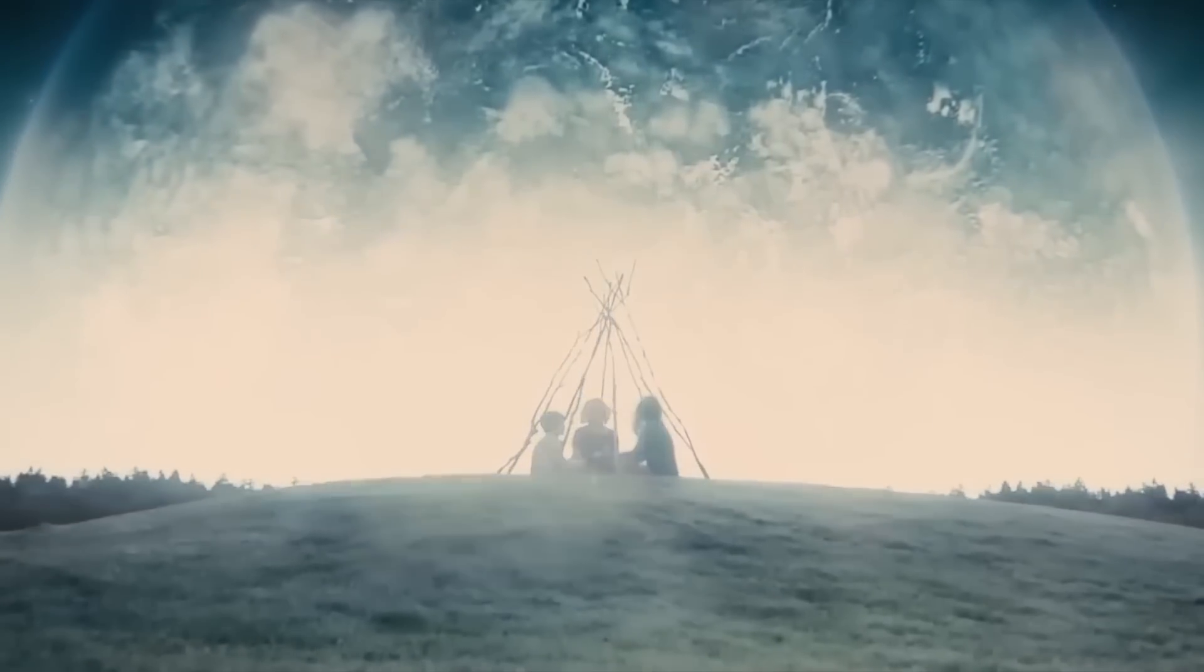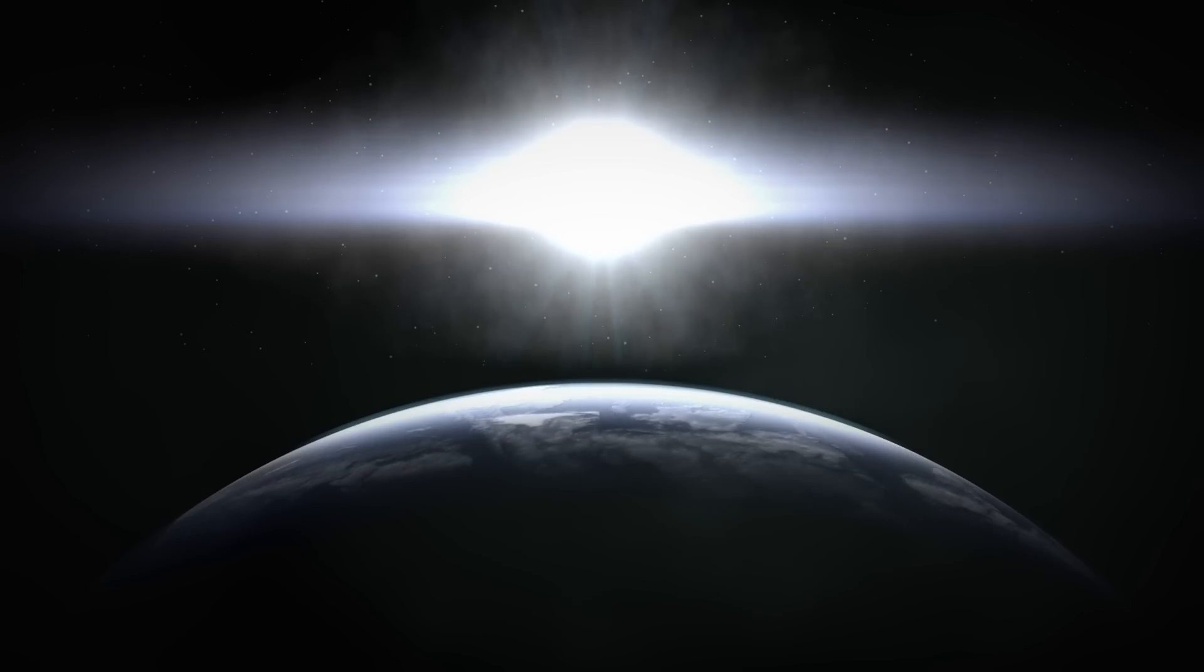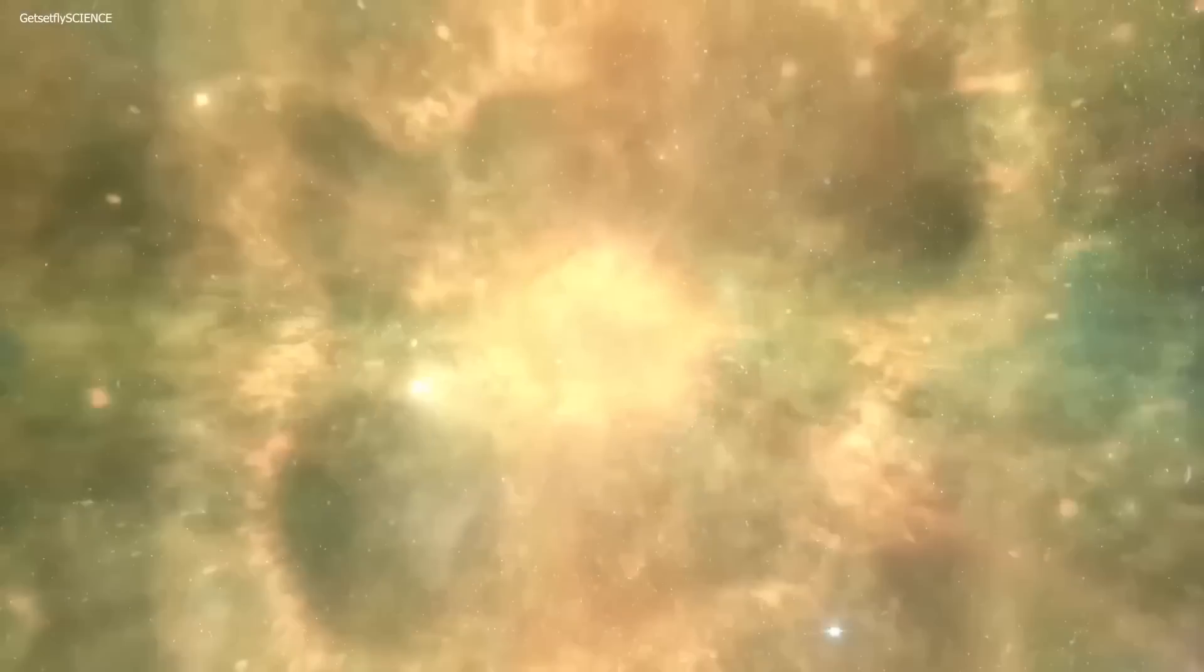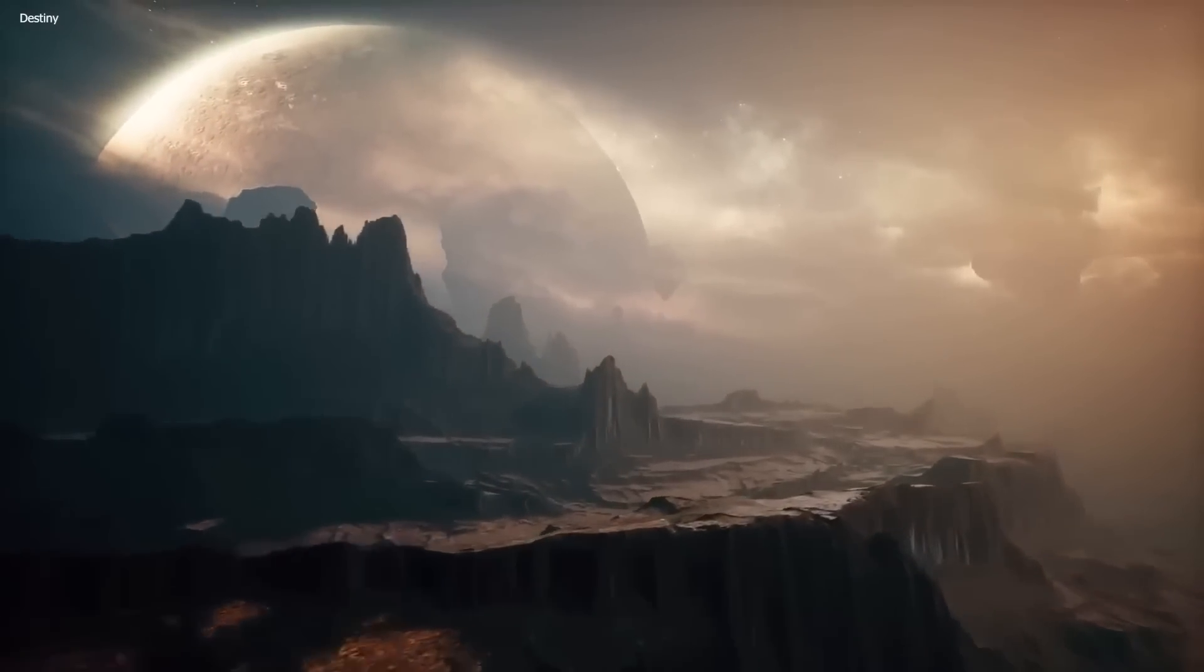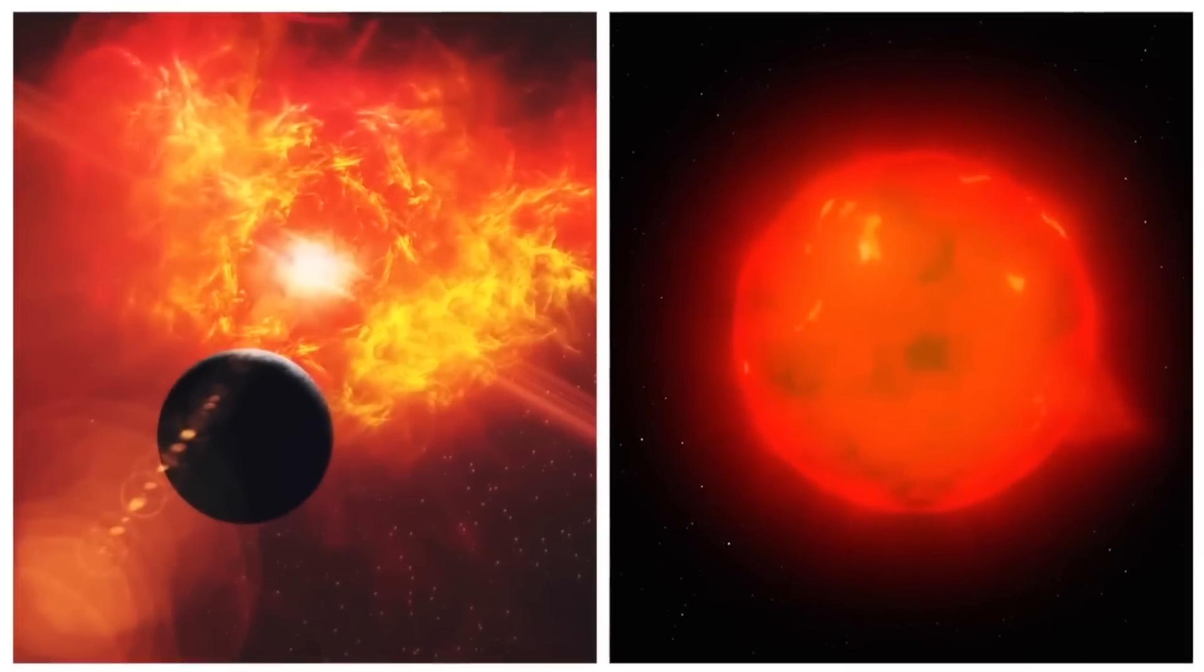Despite its size, Betelgeuse is located relatively close to us, at a distance of 700 light-years, making it the nearest star to the Sun that will eventually end its life in a supernova explosion.